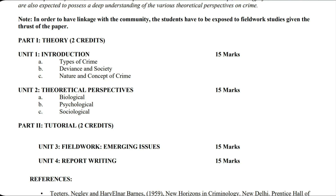Given the thrust of the paper — Paper 1: Theory, 2 credits. Unit 1: Introduction, 15 marks. In this unit you have to study: A) types of crime, B) deviance and society, C) nature and concept of crime. Unit 2: Theoretical Perspectives, 15 marks — A) biological, B) psychological, C) sociological. Part 2: Tutorial, 2 credits. Unit 3: Fieldwork and Emerging Issues, 15 marks.